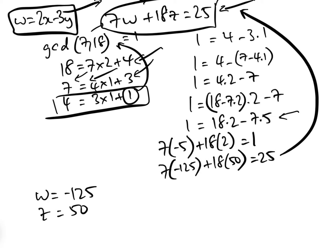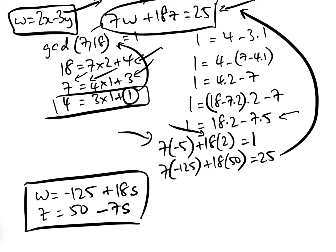We have 7 times minus 5 plus 18 times 2 equals 1. Multiplying everything by 25, we get 7 times minus 125 plus 18 times 50 equals 25. Therefore, comparing that, we know that one particular solution is w equals minus 125 and z equals 50. So the general solution is w equals minus 125 plus 18S, and z equals 50 minus 7S.